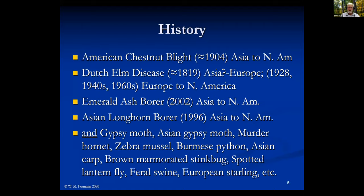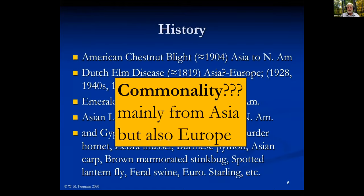There are also others including the gypsy moth, the Asian gypsy moth which is up in the Pacific Northwest, the murder hornet, and the list goes on. Most of these insects and diseases - and this doesn't include invasive plant species like kudzu and bush honeysuckle - have come in from Asia as well as from Europe. The commonality is Asia and Europe, not so much South America, Africa, India, or Australia.